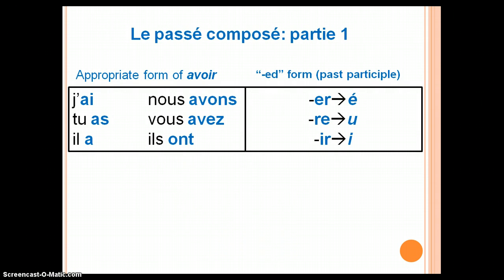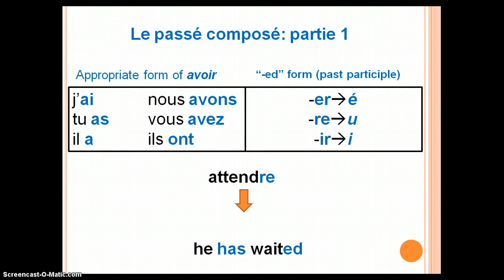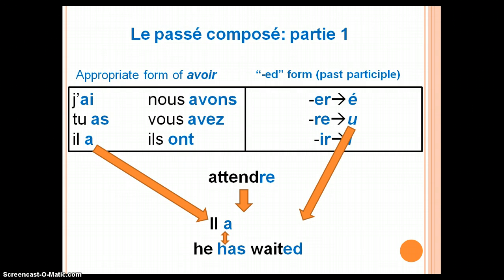As another example, let's use attendre. Imagine you want to say, 'He has waited.' Your first step is to select the appropriate form of avoir — in this case, il a — and the appropriate past participle of your verb. Attendre is an re verb, and re verbs change to u. Now you have il a attendu — he's waited, or he has waited.